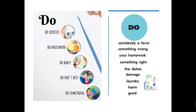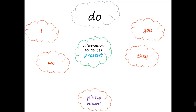Obviously we can change it to simple past — it just changes the "do" for "did." Now I will show you a mind map. When do we use "do"? We use "do" for affirmative sentences in the present. The pronouns we use with "do" are: I, we, you, they, or plural nouns.